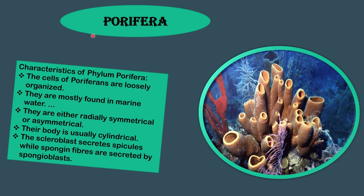The first phylum is Porifera. The cells of poriferans are loosely organized. They are mostly found in marine water. They are either radially symmetrical or asymmetrical, and their body is usually cylindrical. The scleroblast secretes spicules while spongine fibers are secreted by spongioblasts.